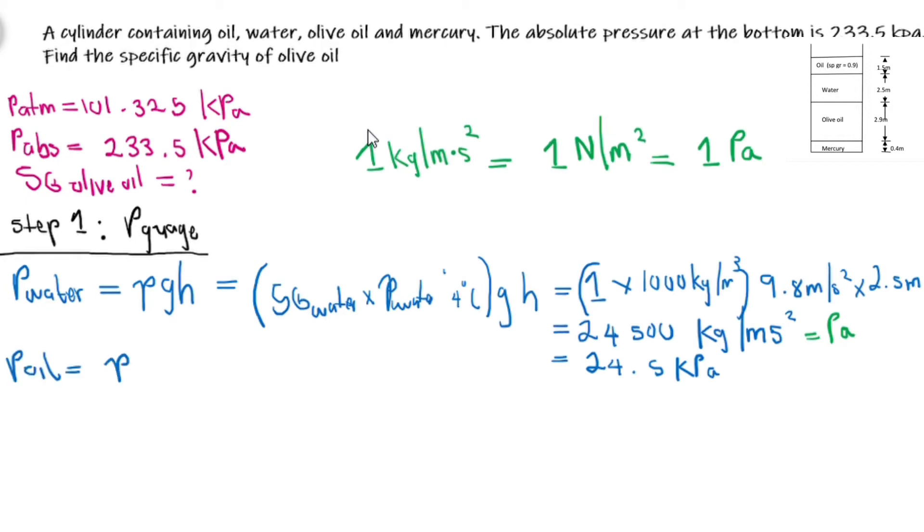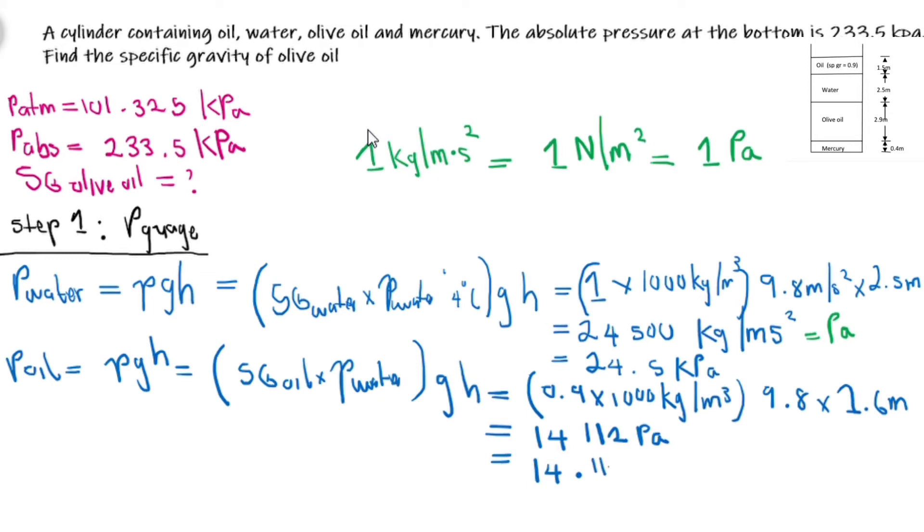For oil: density times gravitational times height, which we can do as specific gravity of oil times the density of water at 4 degrees times gravitational times height. If you punch this onto your calculator after substituting, you should get 14,112 pascal, and this can easily be written as 14.112 kilopascal.